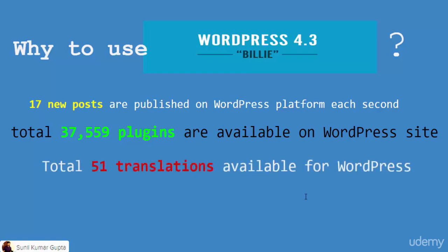There are 51 translations available for WordPress, so you are not restricted to a single language. There are 51 languages supported, so you can create a WordPress website and translate it into any language of your choice. These are the features that make WordPress stand out and the most popular. We are going to use WordPress latest version 4.3 for this course and create awesome websites.